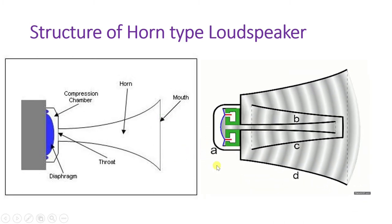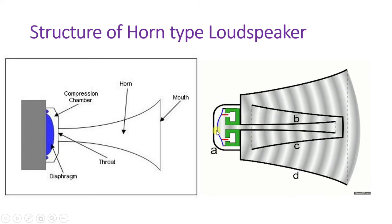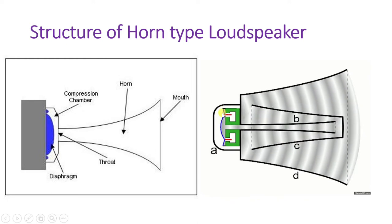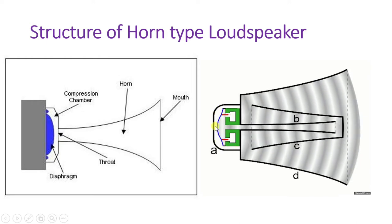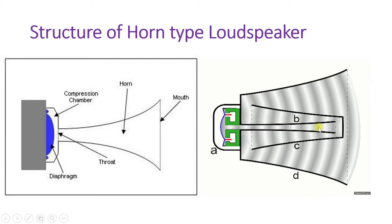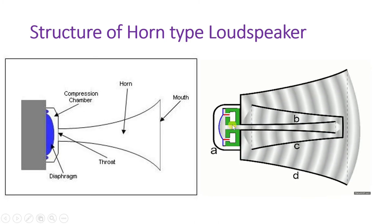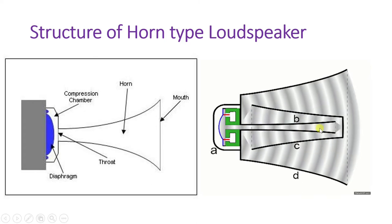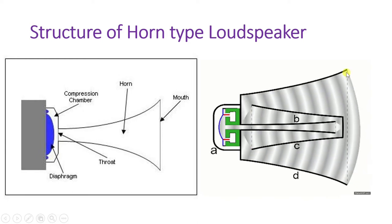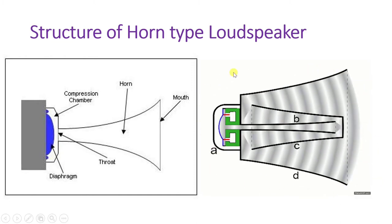There is another type of horn loudspeaker — the double horn structure. Here the diaphragm vibrates; there is a coil to which the electrical signal is given, and based on the signal the diaphragm vibrates and generates sound in the compression chamber. That sound goes through the throat in one direction, then is redirected by a second horn, and finally released through the mouth. This is double reflection by horn.